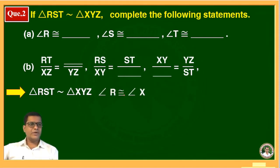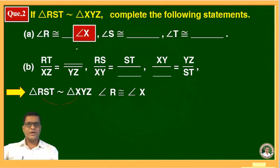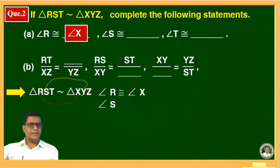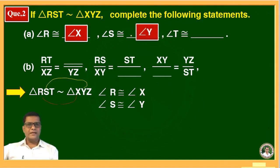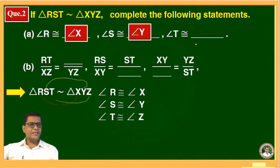Therefore, angle R is congruent to angle X. So the answer for the first blank is angle X. Then angle S is congruent to angle Y — the reason being corresponding angles of similar triangles, so angle Y comes in the second blank. Similarly, angle T is congruent to angle Z, so angle Z fills the third blank.